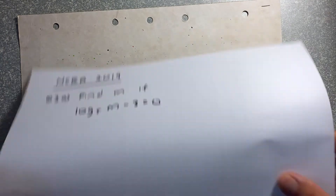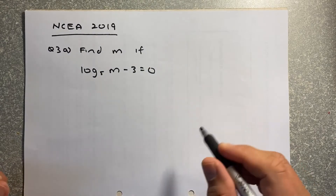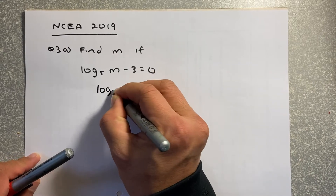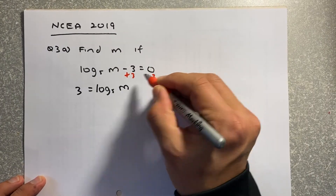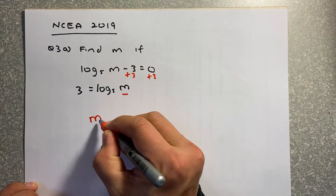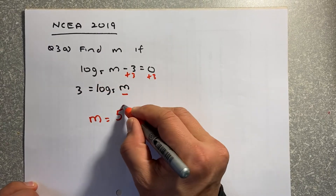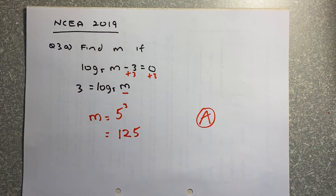Now we look at an NCA 2019 exam question: find M if log base 5 of M minus 3 equals 0. First, rearrange by adding 3 to both sides, giving log base 5 of M equals 3. Now we have the single number in front. Changing to power form, M becomes the first number: M equals 5 to the power of 3, so the answer is 125. This is an achieved-level question.